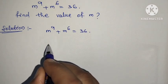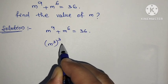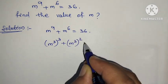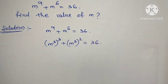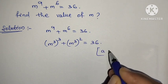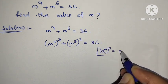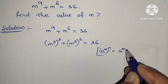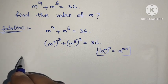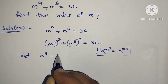We split this one: m to the power 3, whole to the power 3, plus m to the power 3, whole to the power 2, is equal to 36. We know a to the power m, whole to the power n, is equal to a to the power m into n. We apply that here. Let m to the power 3 be equal to t.